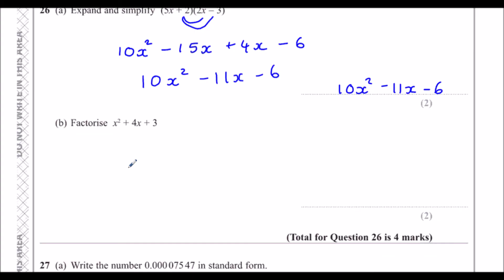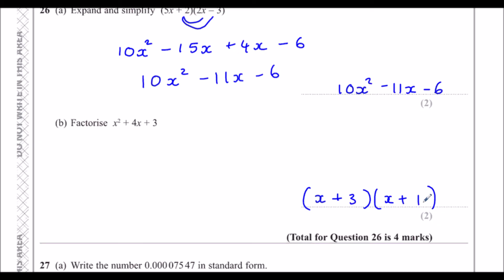Part b: Factorise x squared plus 4x plus 3. It will be double brackets with x in both. We need two numbers that multiply to make 3 and add to make 4 — that's 3 and 1, giving (x plus 3)(x plus 1).